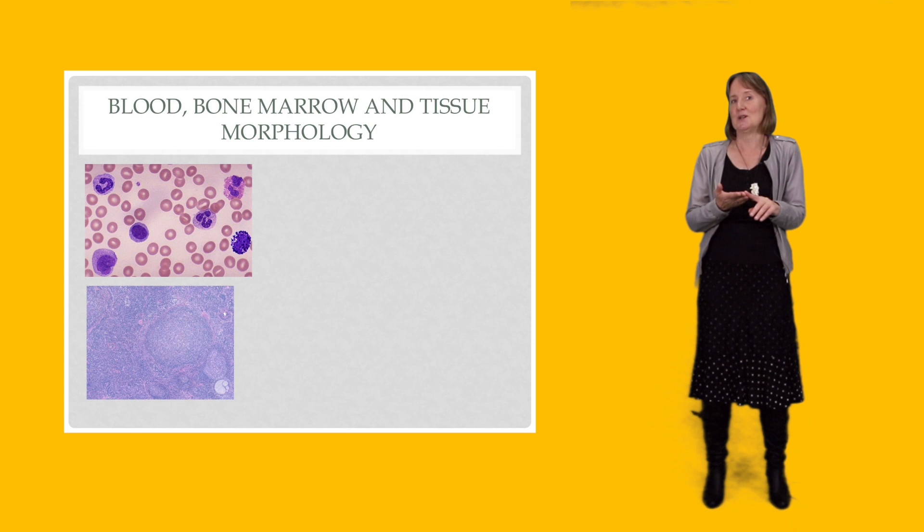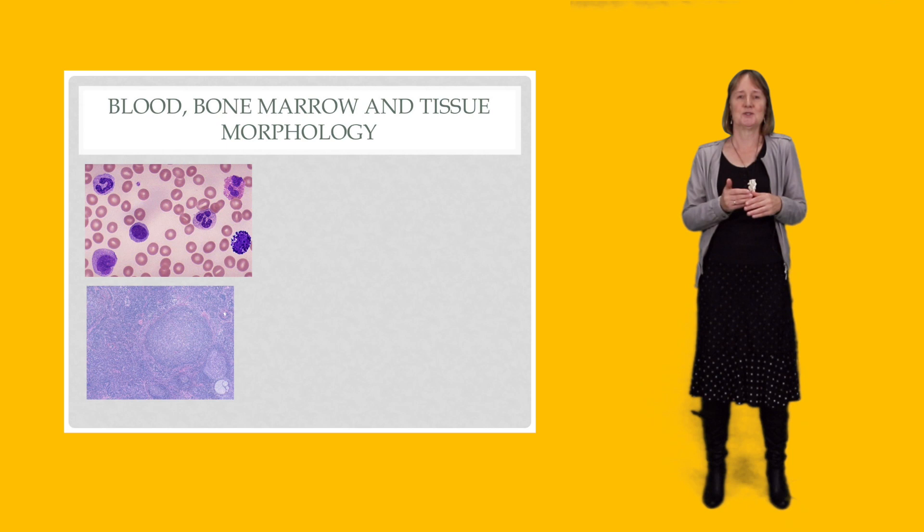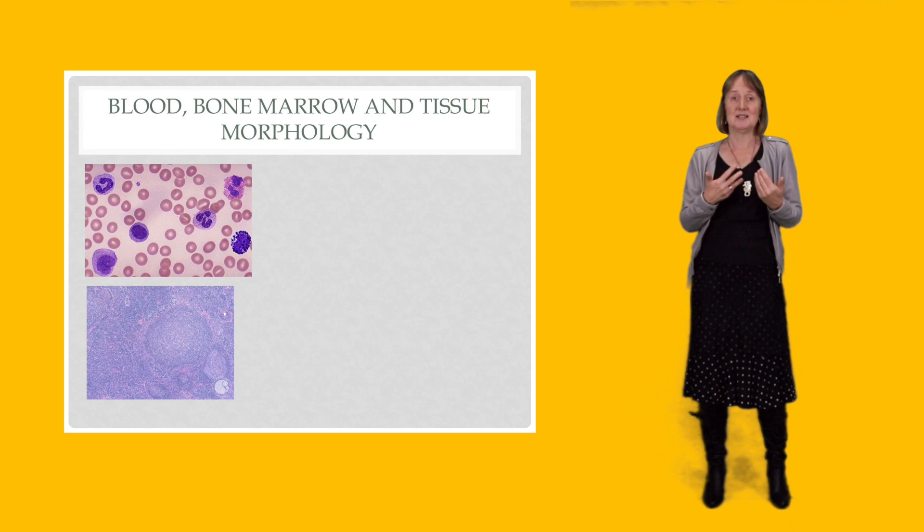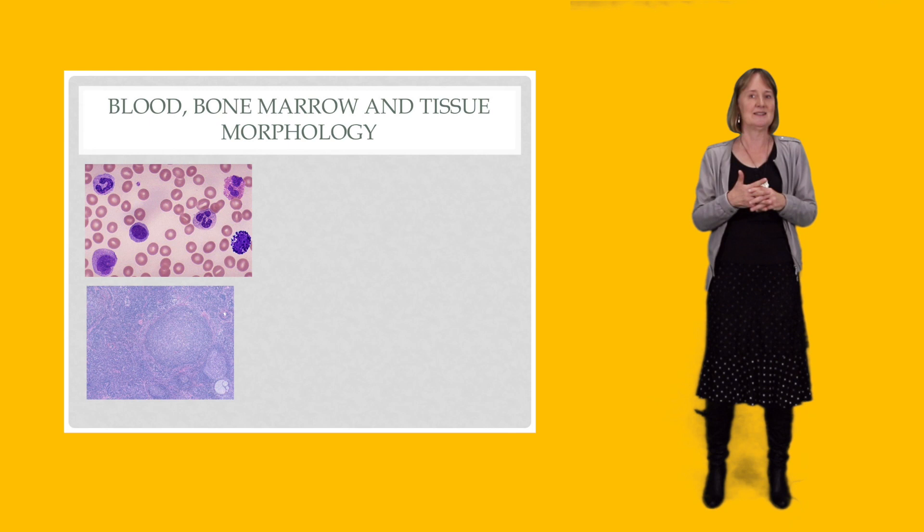So often the next stage in the diagnosis is the laboratory looking at blood or bone marrow or lymph node tissue, sometimes other tissues, but those are the usual ones for hematological malignancy, and interpreting what we see. So unless you become a laboratory hematologist or pathologist, this is not going to be what you have to do, but what I want you to know is that this is what's going on behind the scenes.